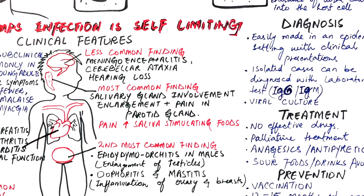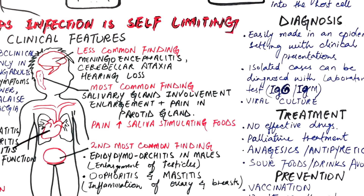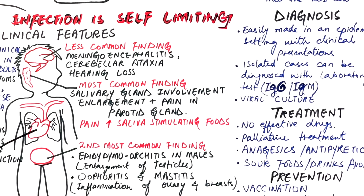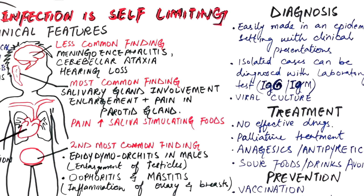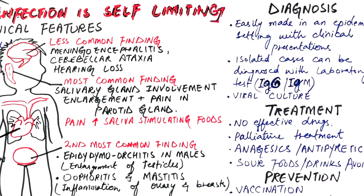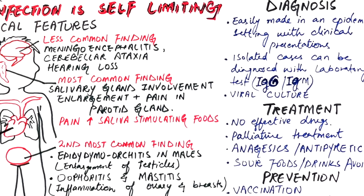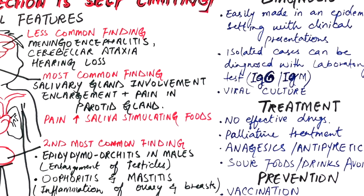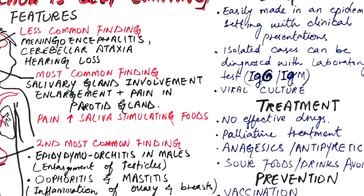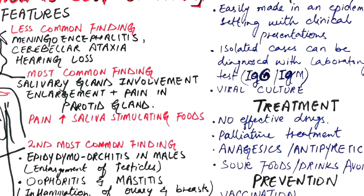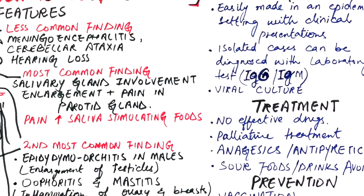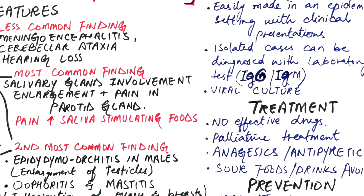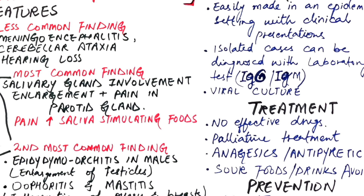There are no effective antiviral drugs for mumps, which is why treatment is palliative. Non-aspirin analgesics and antipyretics can help reduce the symptoms. Sour foods and drinks should be avoided to help reduce salivary flow. Mumps epidemiology has been dramatically improved over the years by vaccination. The vaccine is a live attenuated vaccine — a weakened mumps virus that is not infectious but stimulates the immune system for prevention from future mumps infection. The vaccine is administered between 12 to 15 months of age.